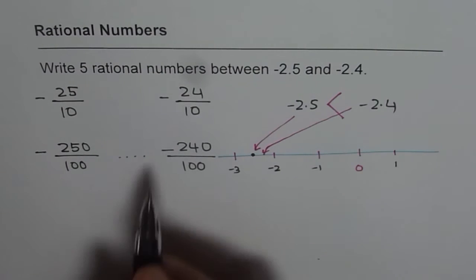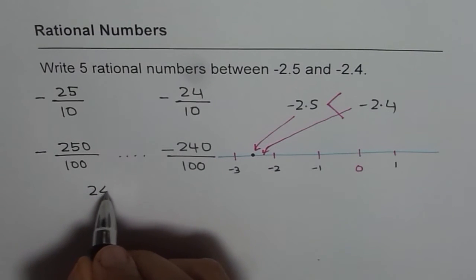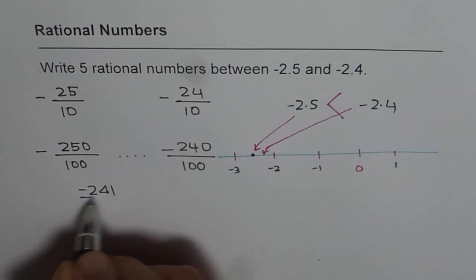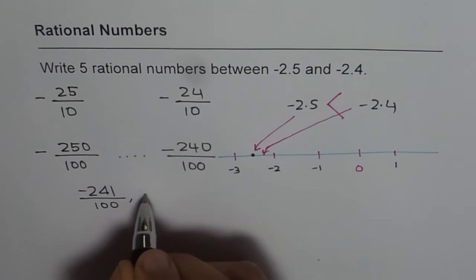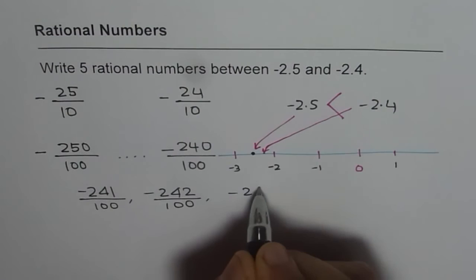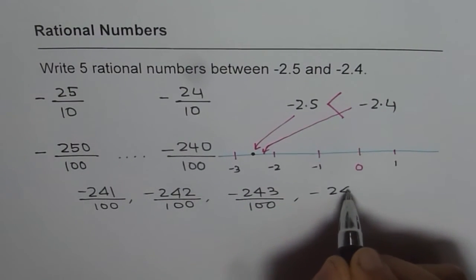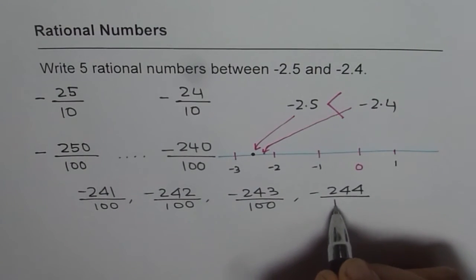So, you could write numbers like minus 241 over 100, minus 242 over 100, minus 243 over 100, minus 244 over 100. Likewise, you can write numbers.